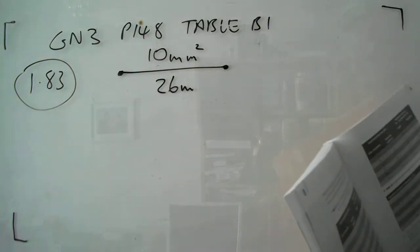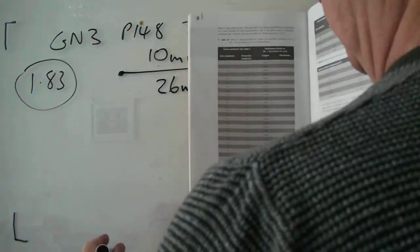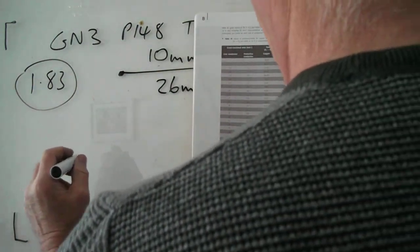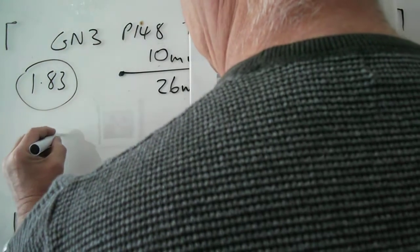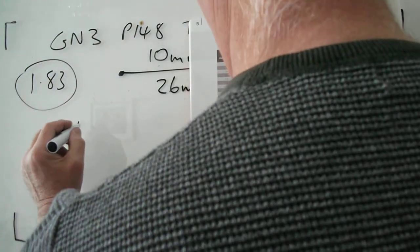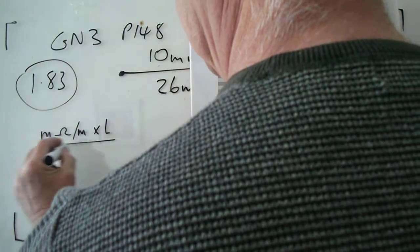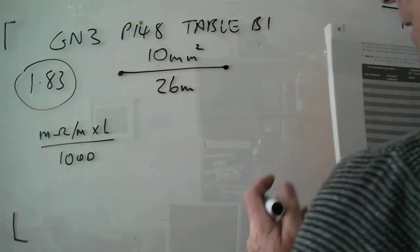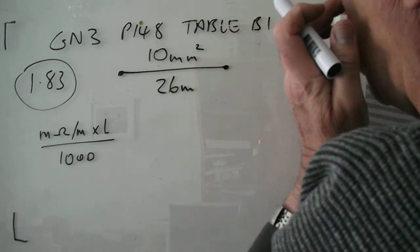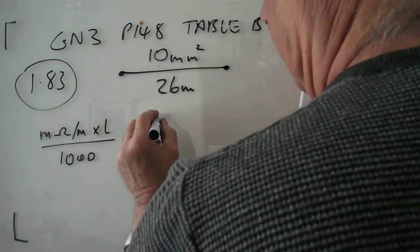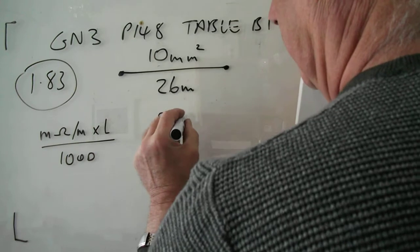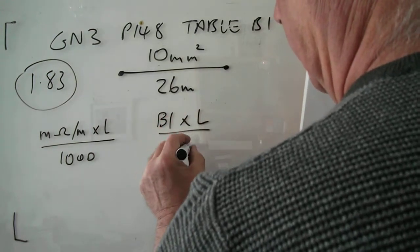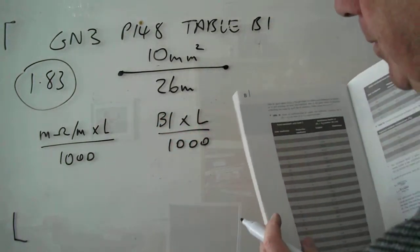The formula is milliamps per meter times length divided by a thousand. You might find it easier to use a formula to be B1 times length divided by a thousand, so that you know it's from table B1.